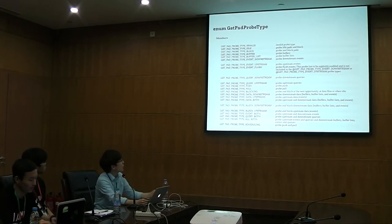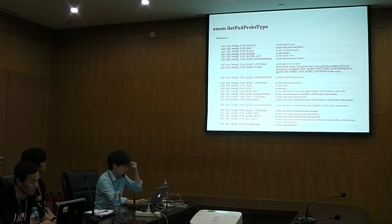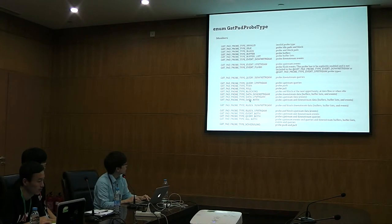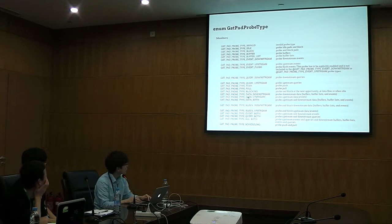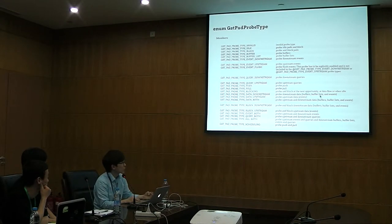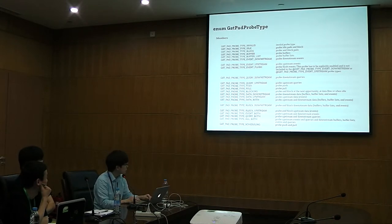There is a full list of probe types — it consists of 22 kinds of types. Some are related to block, and others are related to buffer, event, and query. For example, the GST_PAD_PROBE_TYPE_DATA_DOWNSTREAM type is a combined type — when you use it, you can probe downstream data including buffers, buffer lists, and events.